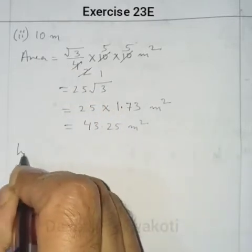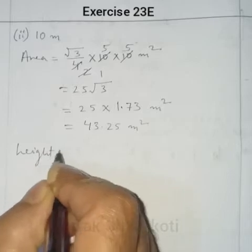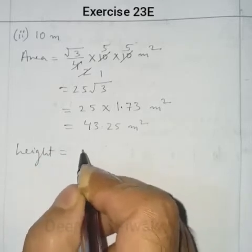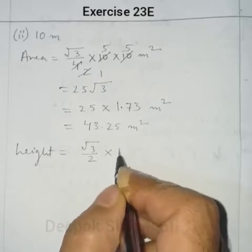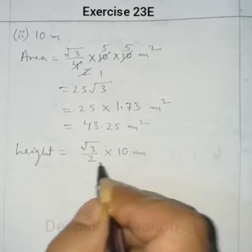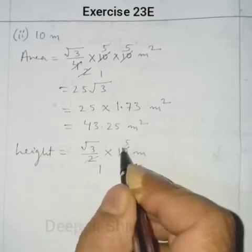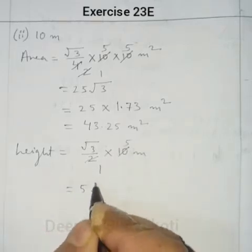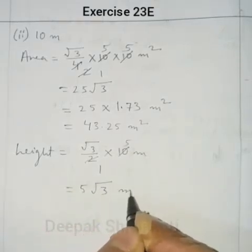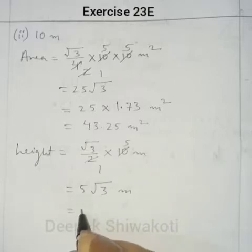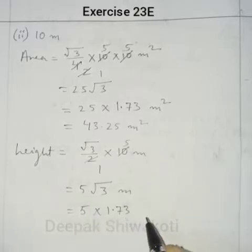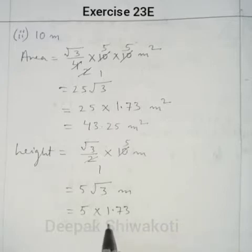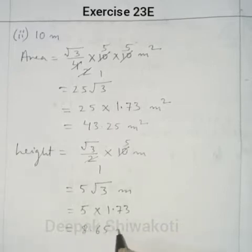Now the height for the same triangle (side 10 m): Height = (√3 / 2) × 10 = 5√3. Since √3 = 1.73, we get Height = 5 × 1.73 = 8.65 m.